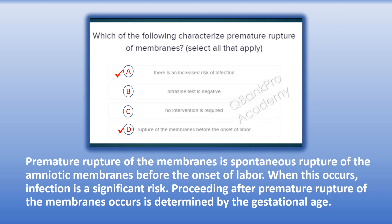The correct answers are A. There is an increased risk of infection, and D. Rupture of the membranes before the onset of labor. Explanation: Premature rupture of the membranes is spontaneous rupture of the amniotic membranes before the onset of labor. When this occurs, infection is a significant risk. Proceeding after premature rupture of the membranes is determined by gestational age.